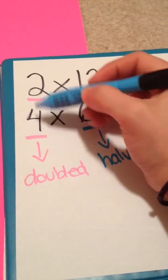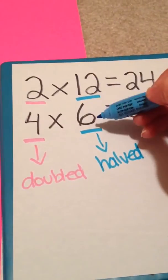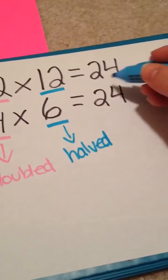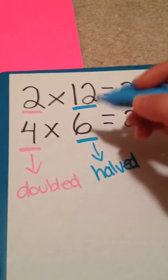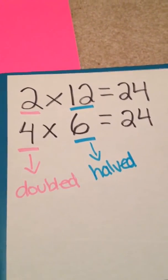You can see if you can half one number or double one number and half the other one, you still get the same amount at the end. You still have the same amount of candies. Now let's take a look at another example and see if this works for other examples too.